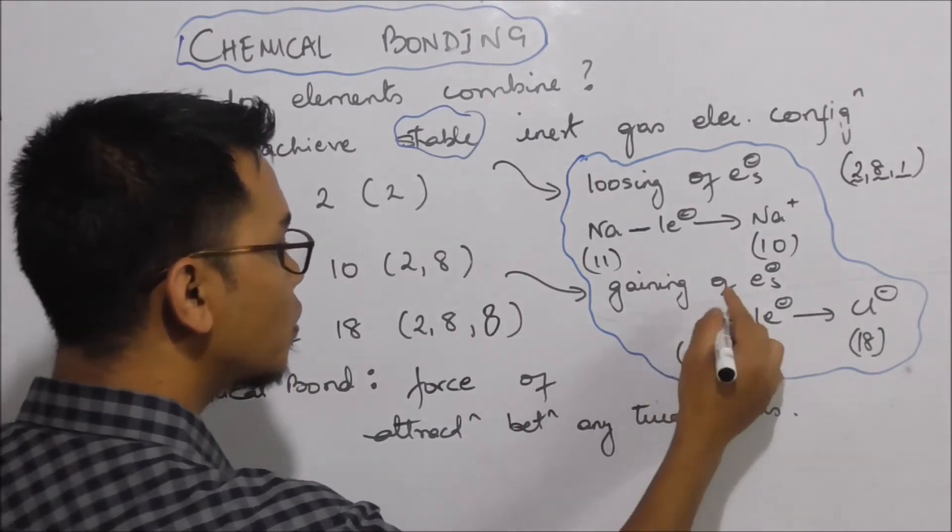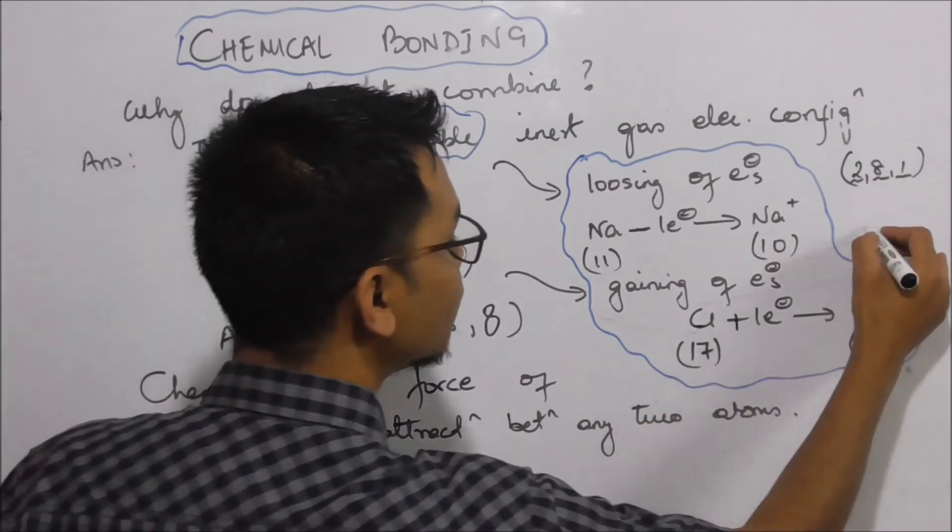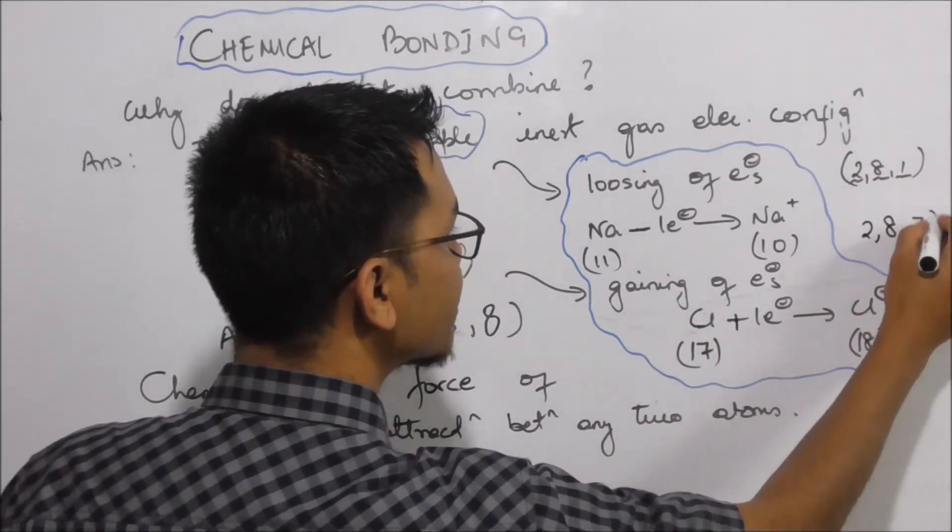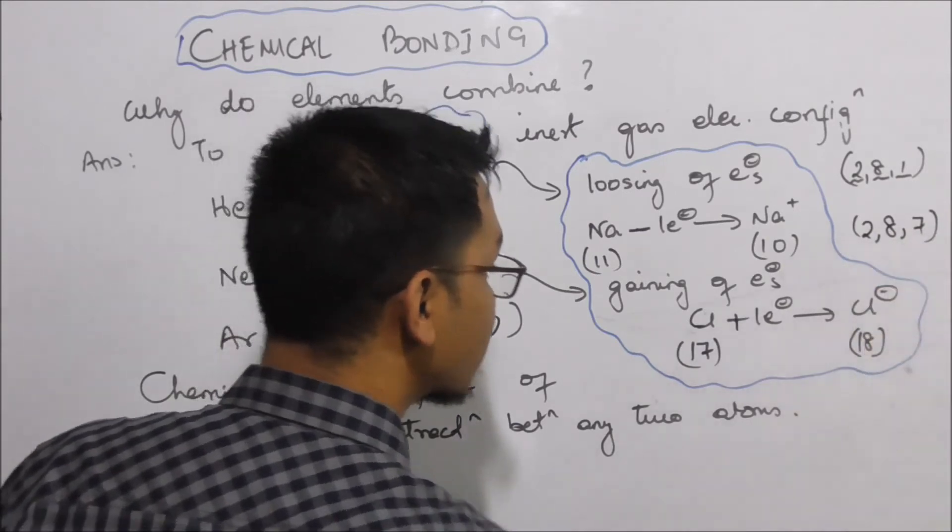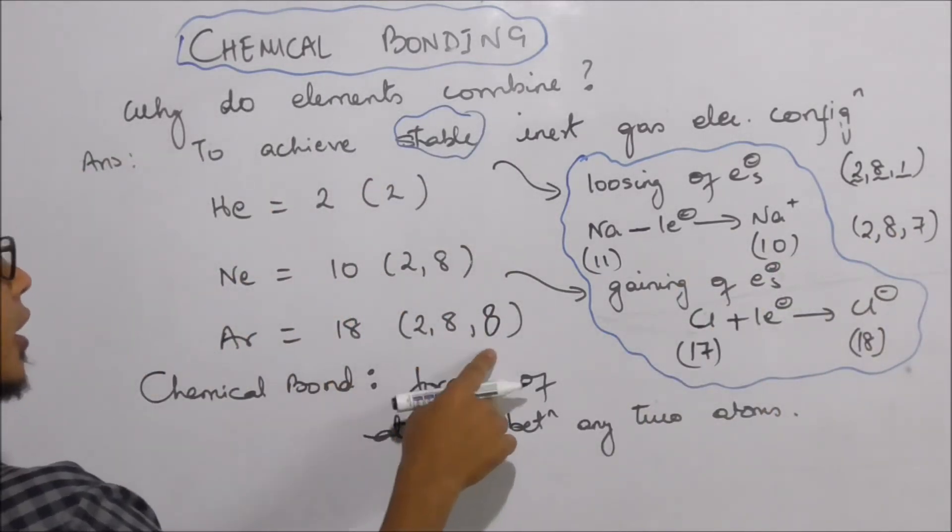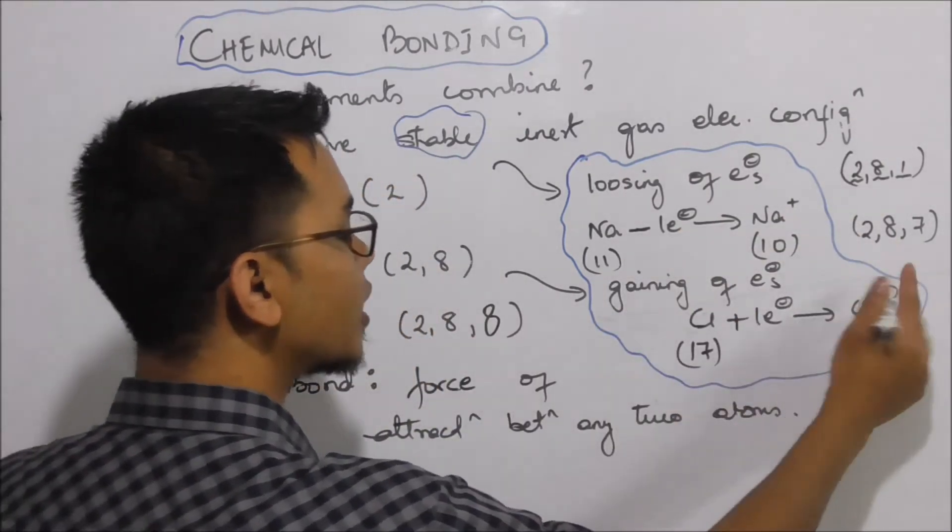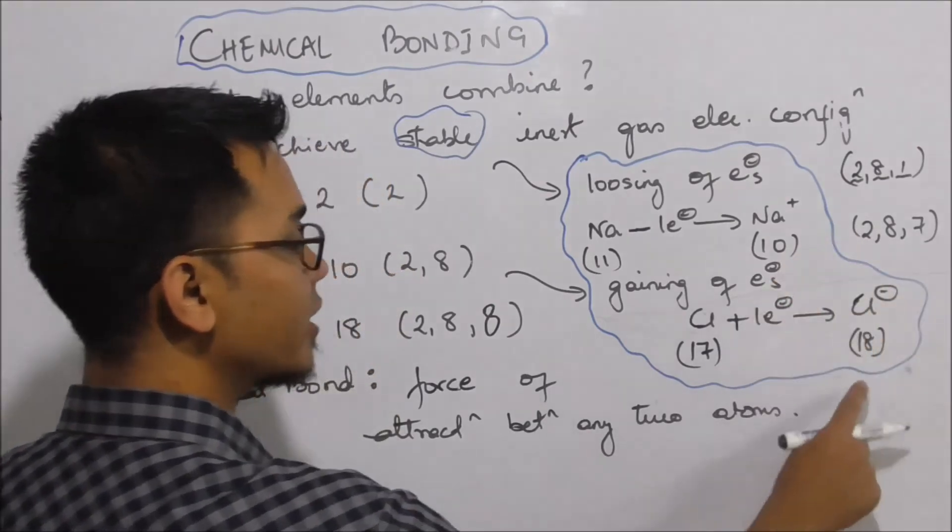Chlorine atomic number is 17, so it becomes 2, 8, 7. 2 plus 8 is 10, plus 7 is 17. In order to be stable at 18, it becomes 2, 8, and 8. It gains one electron to become Cl- and is stable.